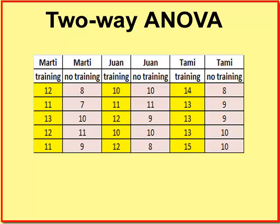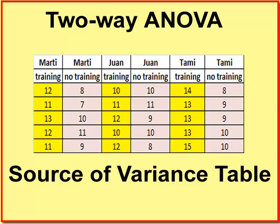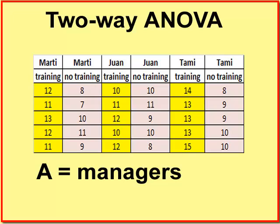There's the data. You're gonna have to pull up that source of variance table for a two-way ANOVA. It is on our Moodle site, so pull it up. It might be a good idea to print it out as well.